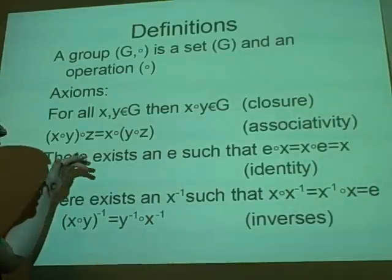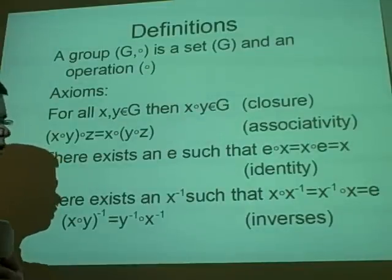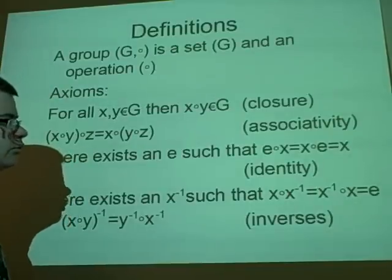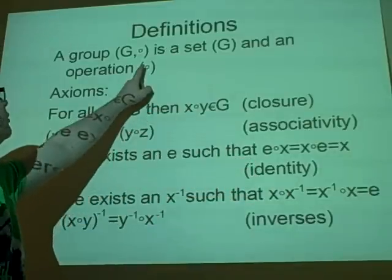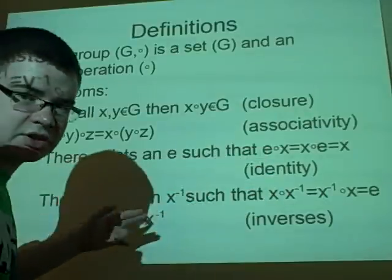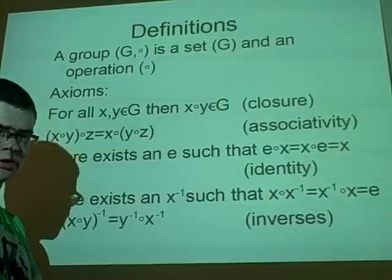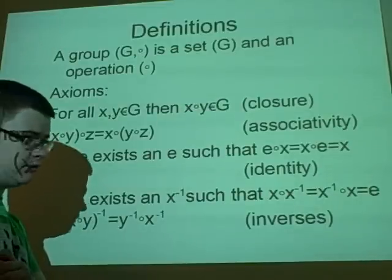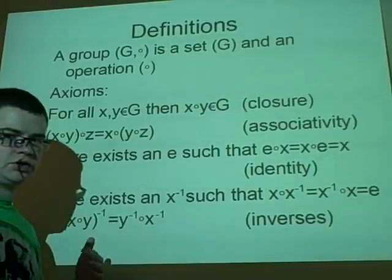There exists the identity, so just like in matrices really. There is something that you can apply the operation and it will end you up with the same answer. A few examples: with addition, the identity will be 0. If you add 0, you'll end up with the same number you started off with. With multiplication, the identity will be 1. If you multiply 1, you'll end up with the same as you started.